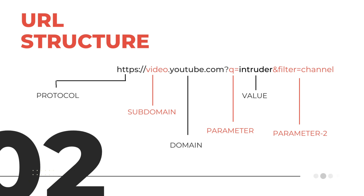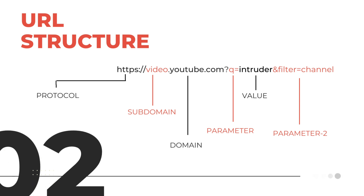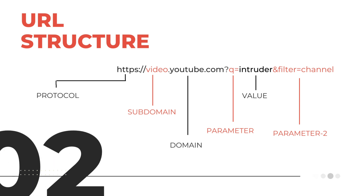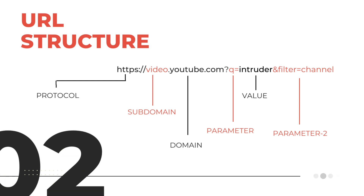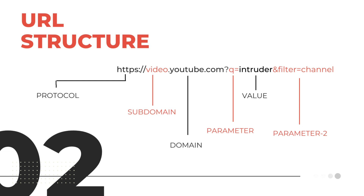At last, the parameter and value pair. This is generally found in GET type requests. You can send data to the server this way. The parameter is the name of the key you are sending to the server, whereas the value is the value of that key.